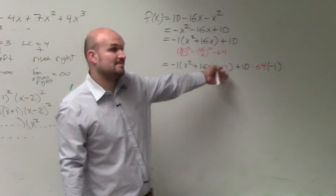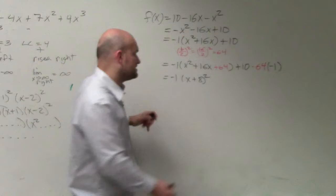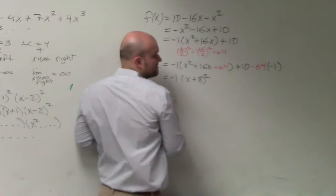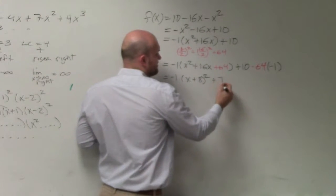So you should be thinking, what is the same number that multiplies to give you 64 but adds to give you 16? And then negative times negative is a positive, so therefore it's plus 74.